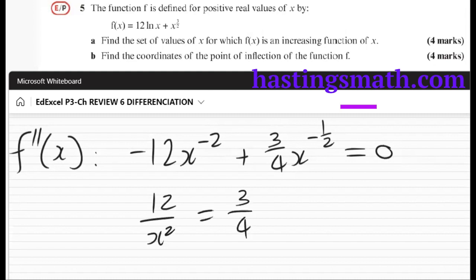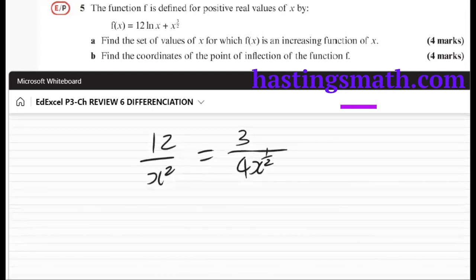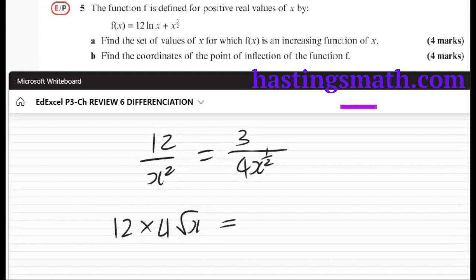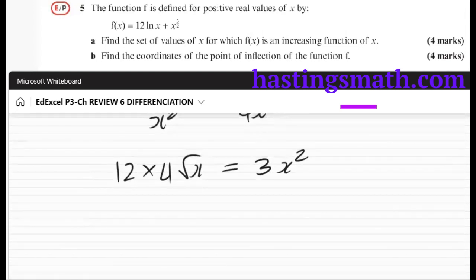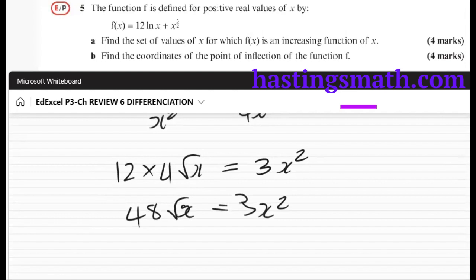Just bearing in mind that x to the a half is the square root. I'm gonna cross multiply. So 12 times 4 root x equals 3 x squared. Just deviating slightly from the mark scheme over here. 12 times 4 is 48. So divide both sides by 3.